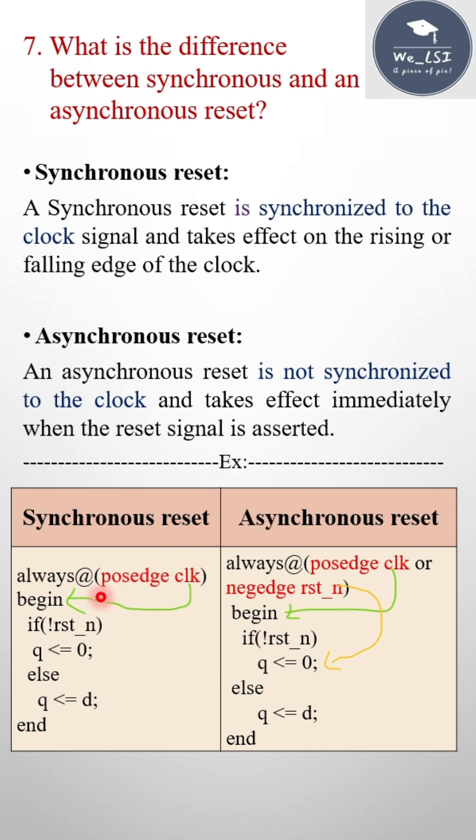So if you see this example, this is the code for a D flip-flop with the active low reset. That means here in the sensitivity list of the always block, we are giving the posedge clock. So whenever the posedge clock is detected, it will enter the block.